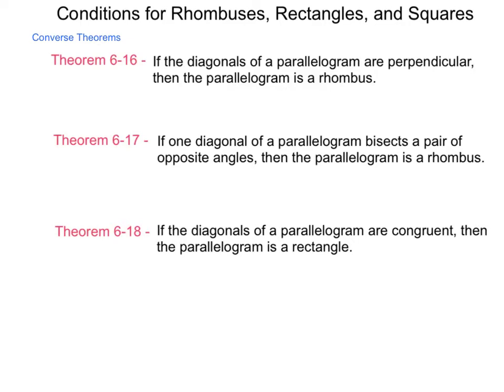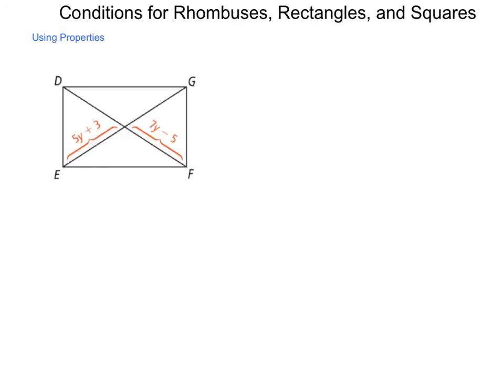With these theorems coupled together with the things we saw in our previous lesson, what can we do with them? How can we start justifying the existence of these different shapes? Let's take a look at one example. Here we have a shape, and we're given two of the half-diagonals, or semi-diagonals.